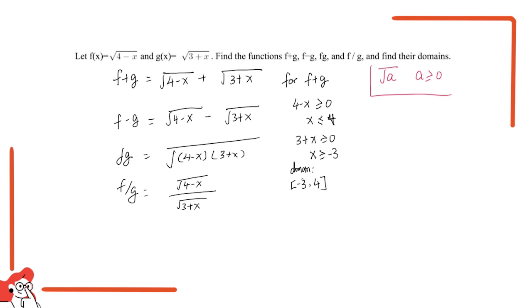For f minus g, it's very much the same. We do not need to care for the negative sign here. f minus g can be any number, but the square root of something cannot be a negative number. So it's the same. The domain is still negative 3 to 4.